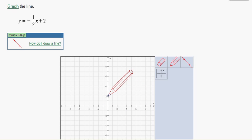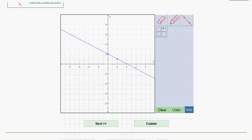Put your pencil on the dot and count down 1 and right 2. Make a second dot, grab your line tool, click those two points, and we should be good to go.